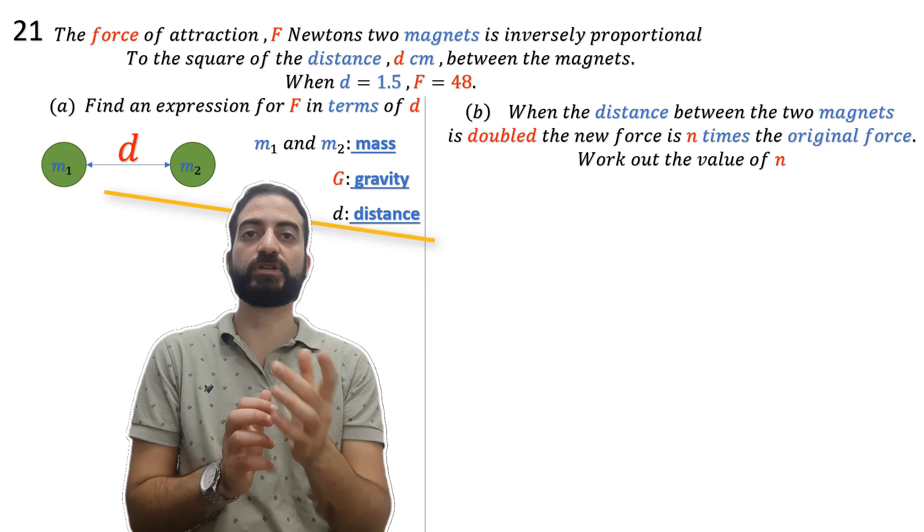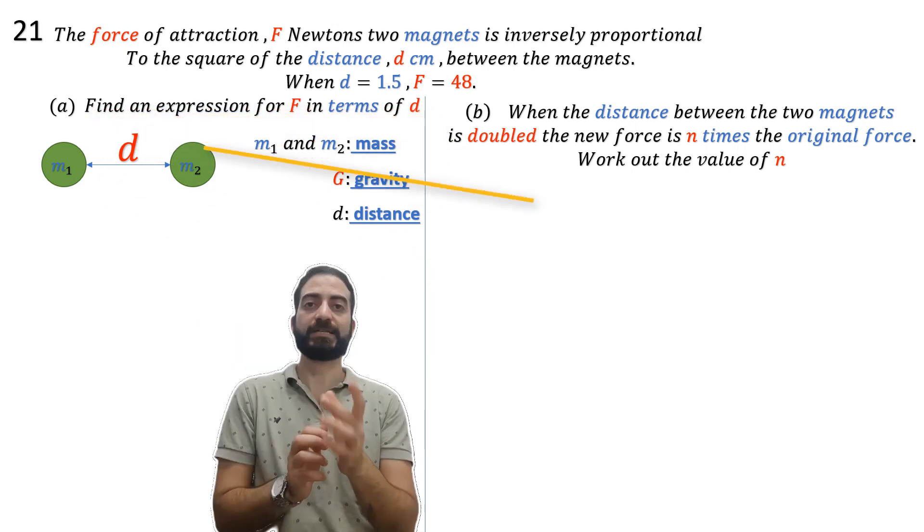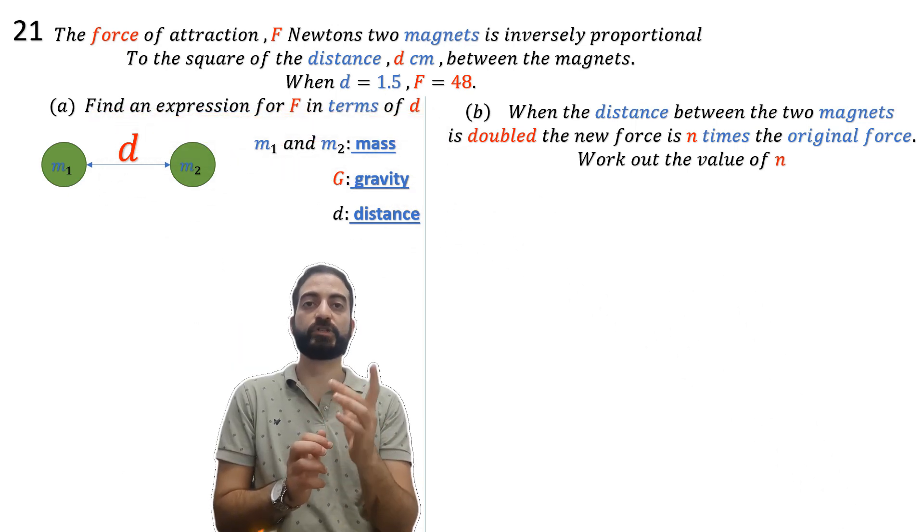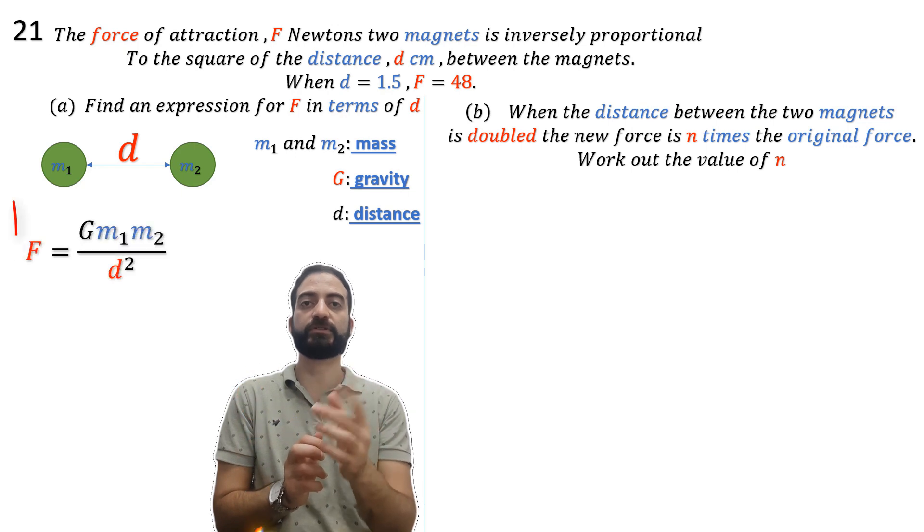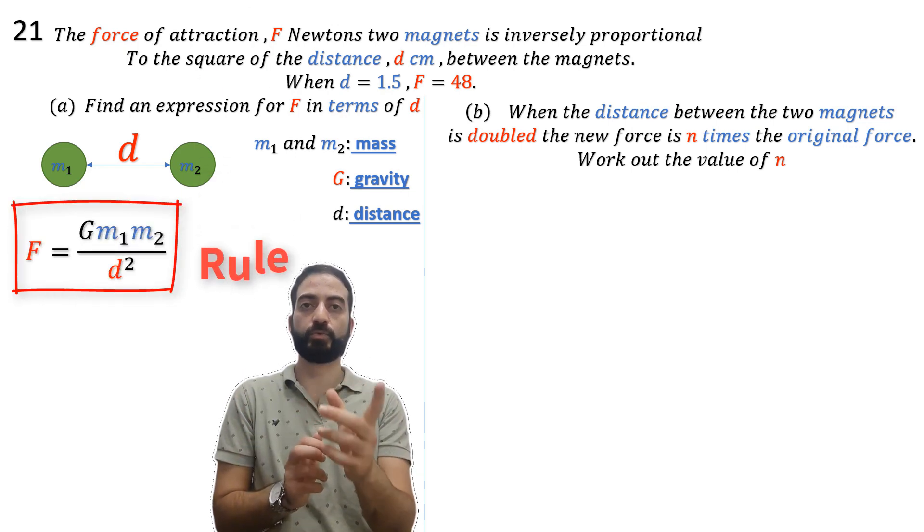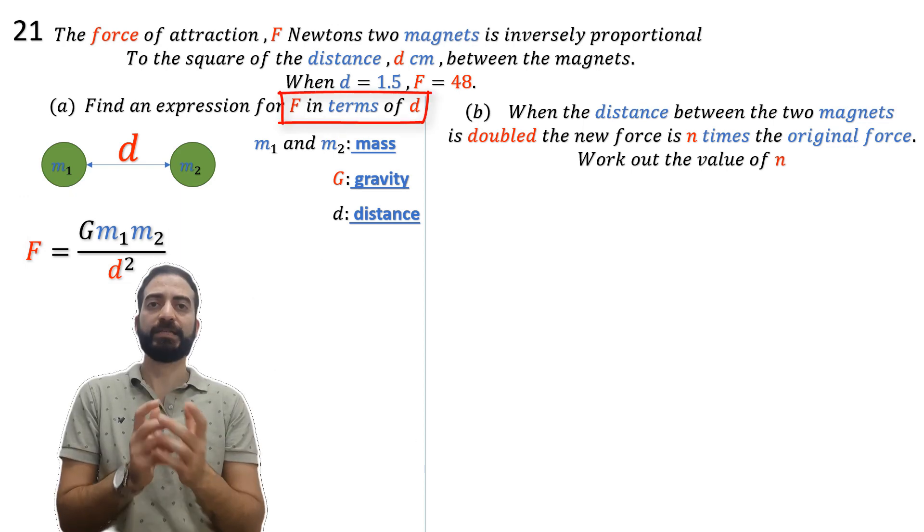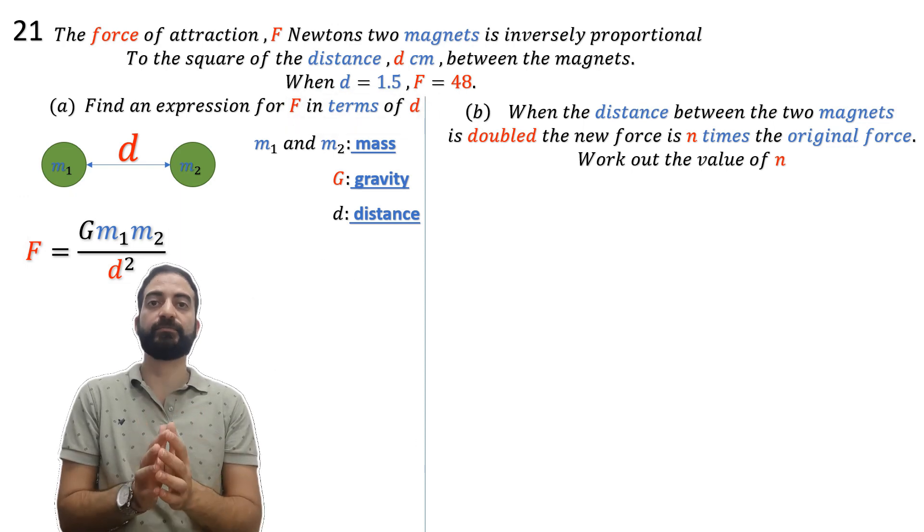We are required to find an expression for F in terms of d. We know that the force formula is Gm₁m₂ over d squared, which can be written as F = k/d². To write the force in terms of d, we must first find the value of k.